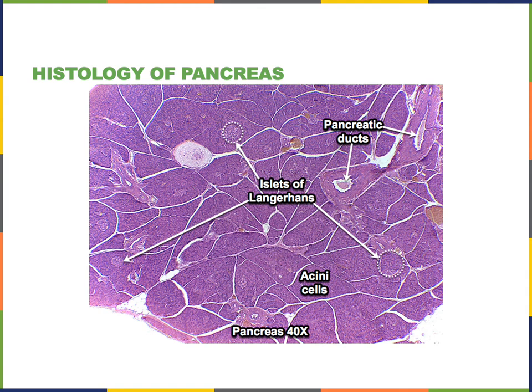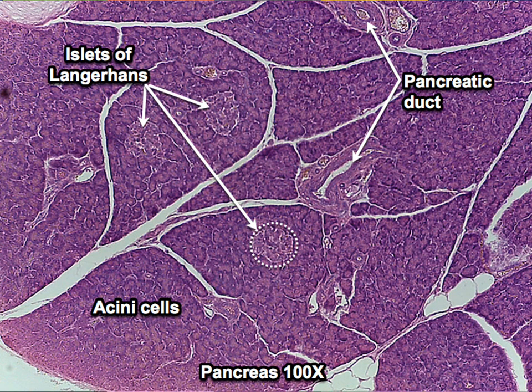Here we see the histology of the pancreas at low magnification, where the majority of the cells are the acini cells, which are the exocrine cells. There are islets of Langerhans — circular-shaped, lighter-staining structures that contain the endocrine cells. Here we see a higher magnification view of the pancreas with several islets of Langerhans indicated.